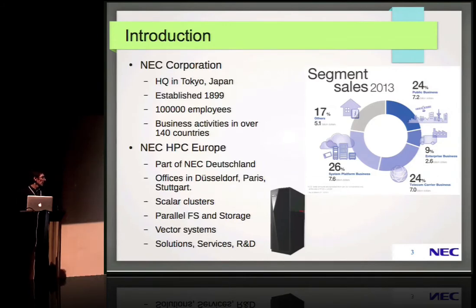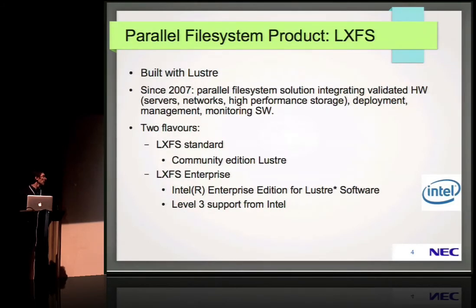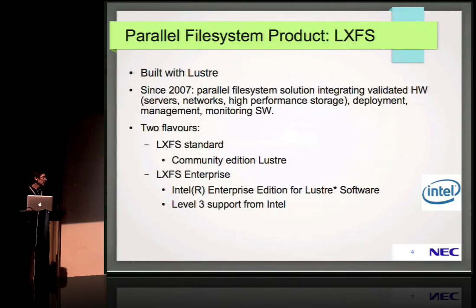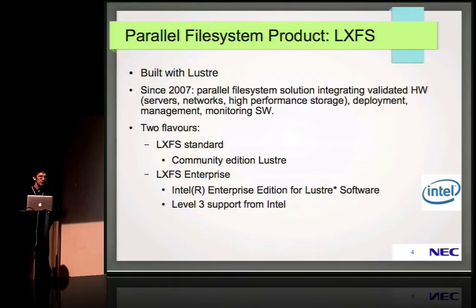Our part of the business is within the system platform business unit — that's the lower left side of the segment circle. The parallel file system product is called LXFS. It is built with Lustre; we've been doing this since 2007. This is a parallel file system solution integrating validated hardware — servers, networks, high-performance storage. It contains deployment management and monitoring software, and it comes in two flavors: the standard flavor built with community edition Lustre, currently version 2.5.3, and the enterprise edition built with enterprise Lustre software where Level 3 support comes from Intel.